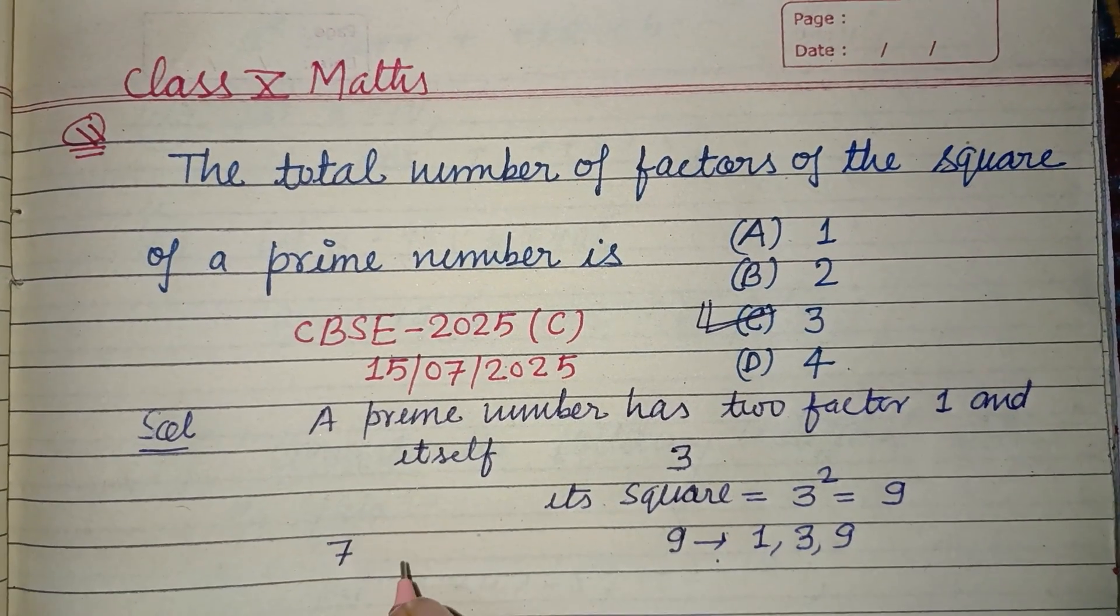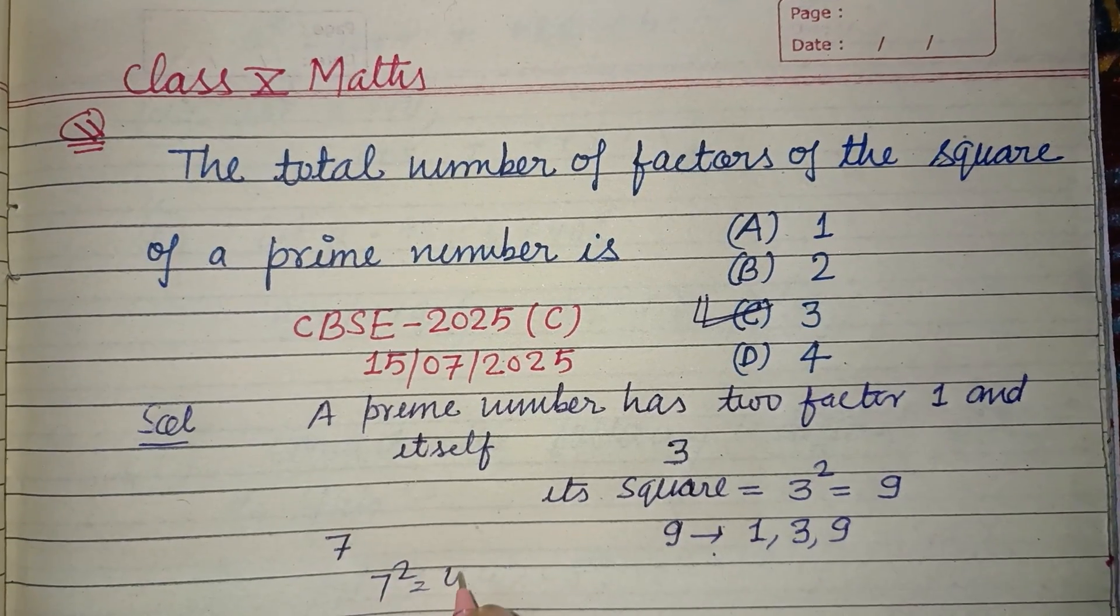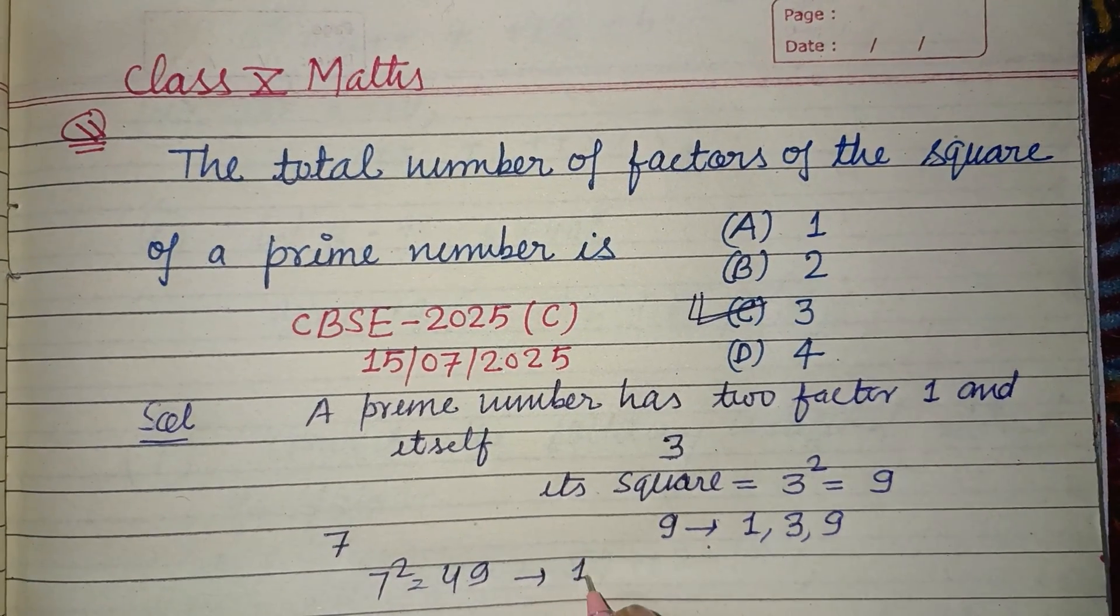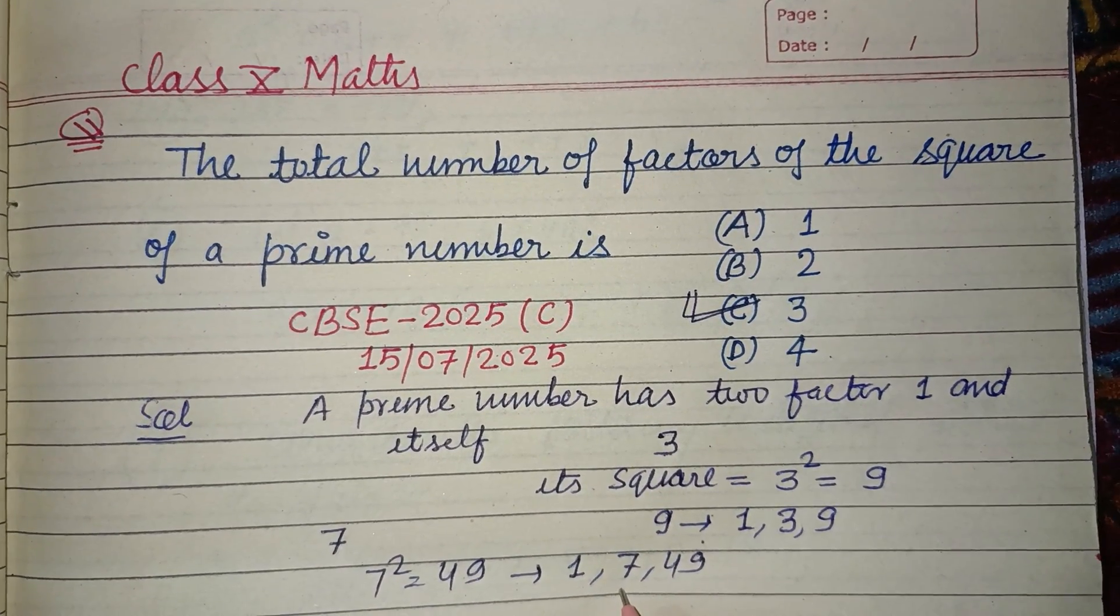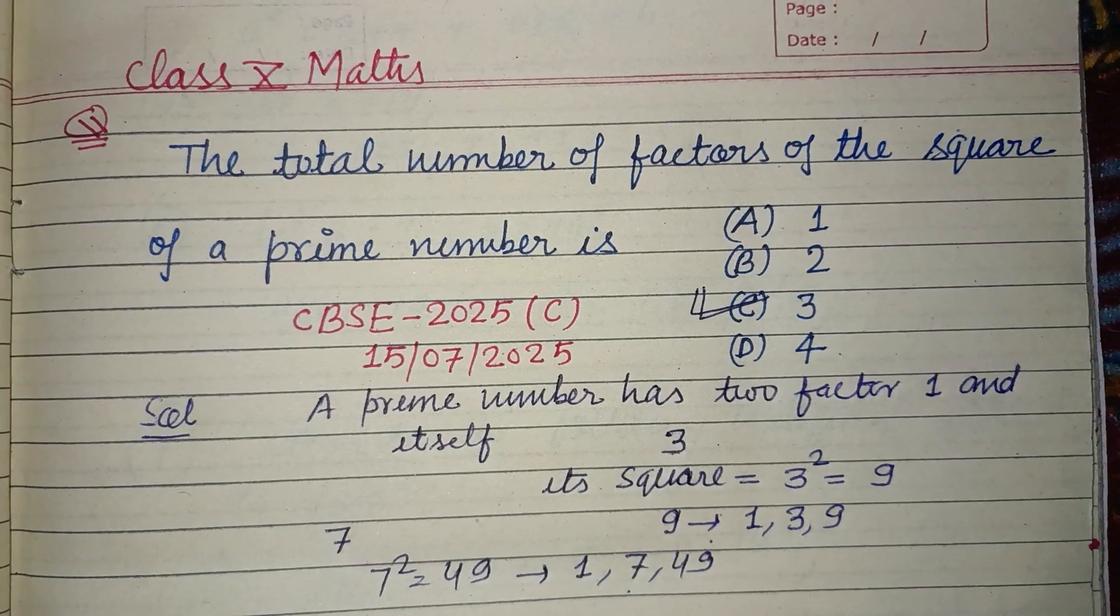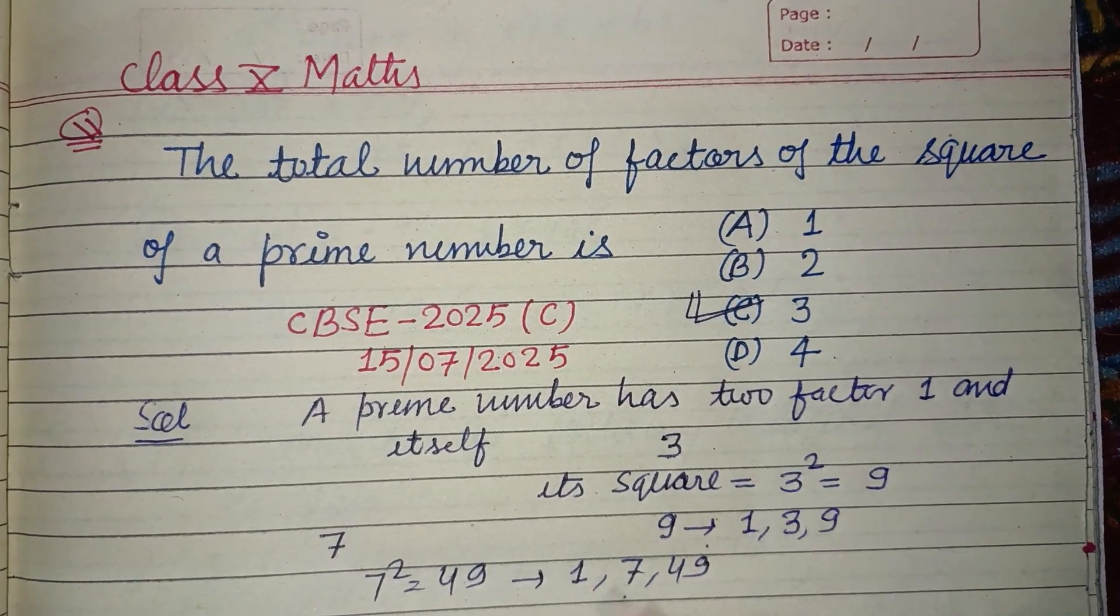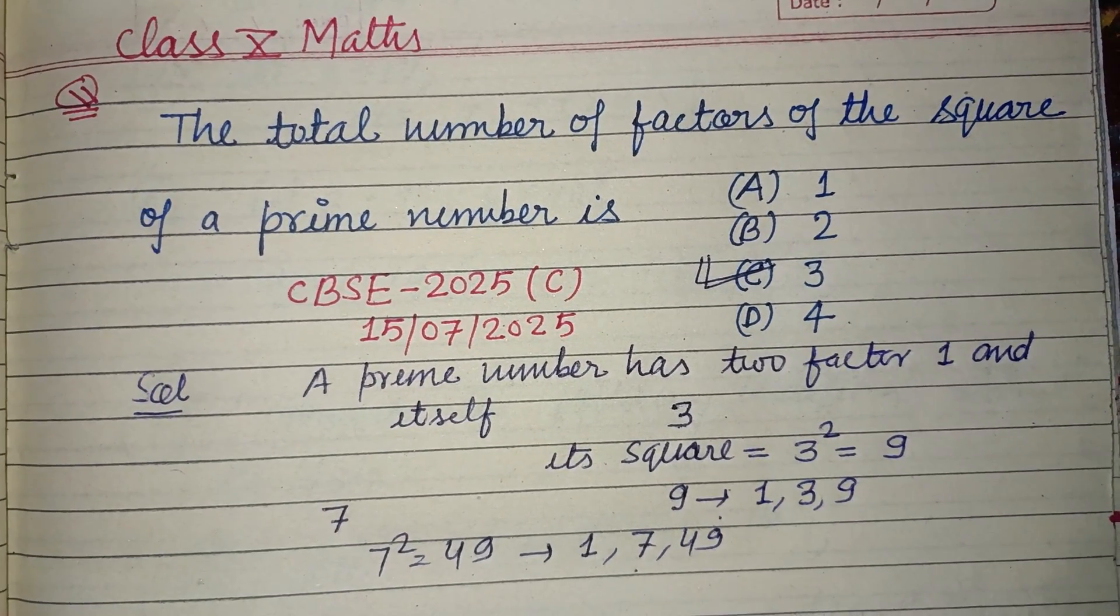Similarly, you can do this by taking seven. The square of seven is 49, so 49 is divisible by one, seven, and 49. So it also has three factors. The answer is C. Thanks for watching.